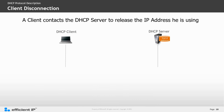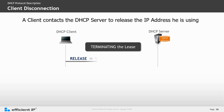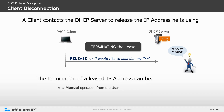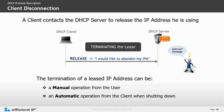The last scenario is client disconnection. A client contacts the DHCP server to release the IP address it is using. The DHCP client terminates the lease by sending a DHCP Release as a unicast message to the server that provided the IP address. That address then becomes available in the pool of available IP addresses on the DHCP server. The termination can be a manual operation by the user or an automatic operation from the client when shutting down.